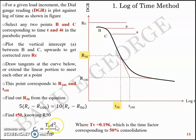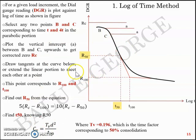So the second method is the log of time method and the first is the square root of time method. In the square root of time method the time factor used is 0.848, and in the log of time method it is 0.196.